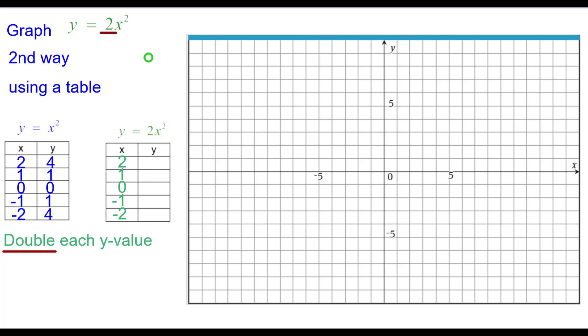So 4 times 2 will be 8, and plotting 2 comma 8. 1 times 2 is 2, plotting 1 comma 2. Double 0 and you still get 0 so the origin. Again 1 times 2 is 2, so negative 1 comma 2. And then finally negative 2 comma 8.